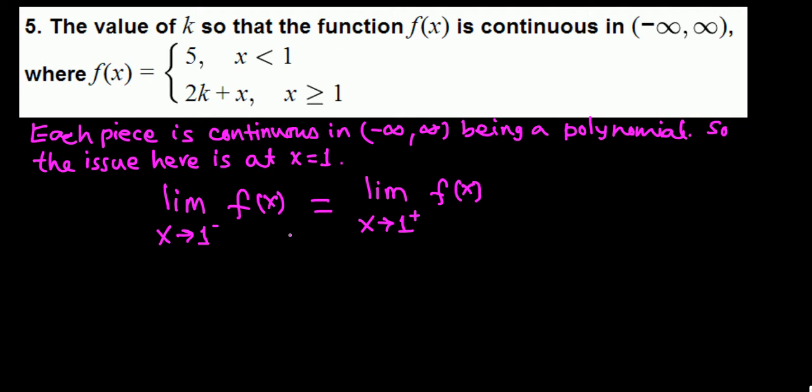The left hand limit is found by x less than 1, which is just 5. The right hand limit when x approaches 1 from the right side, we use the second piece, 2k plus x. To evaluate this limit, we simply plug in x equals 1.